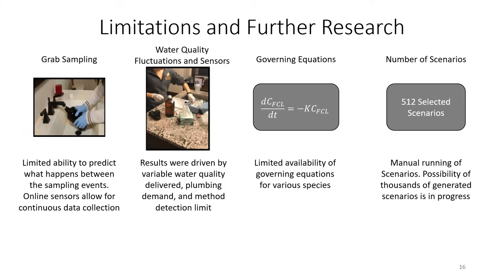Limitations of this study include the use of grab sampling for calibration data, which limited the ability to predict what happens between sampling events, especially when calibrating to a one-minute time interval — online sensors would allow continuous data collection. Calibration results were also driven by variable water quality from the distribution system, plumbing demand, and method detection limits. There was limited availability of governing equations in the literature for various species, and the manual running of scenarios led to a relatively small set of 512 selected scenarios. The possibility of generating thousands of scenarios is being considered and is in progress.